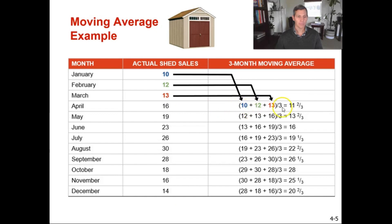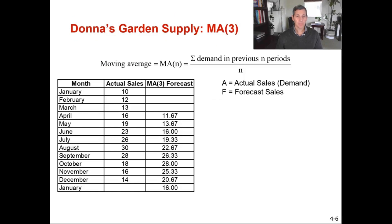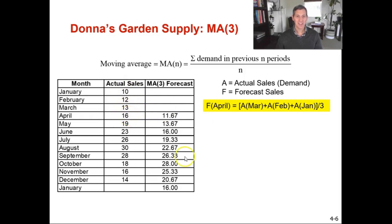For April, you take the previous three months — January, February, and March — which are 10, 12, and 13. Do not include April's actual sales. Some people get this wrong by taking 16 plus 13 plus 12, but that would be wrong. Make sure you use the three months prior to the target month and do not include the current month. So 13 plus 12 plus 10 divided by 3 gives you 11.67 for the April moving average.